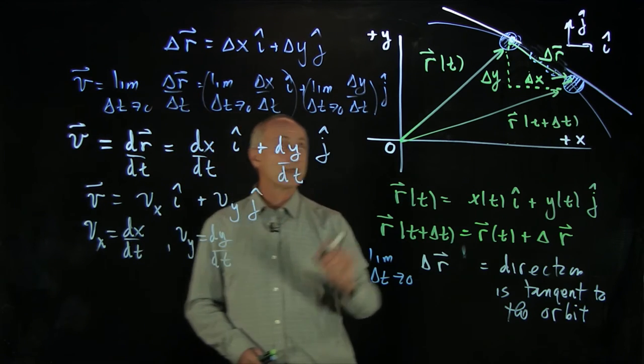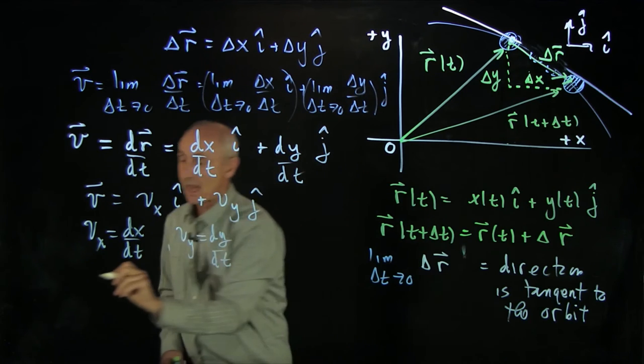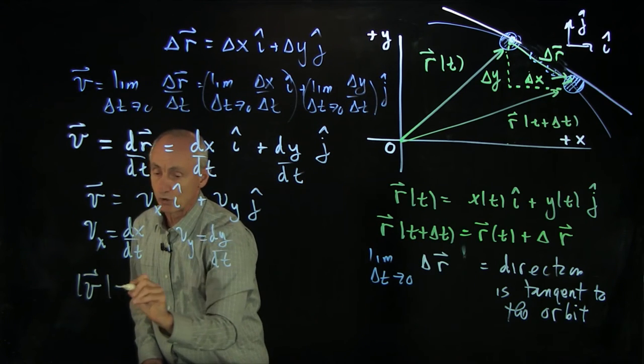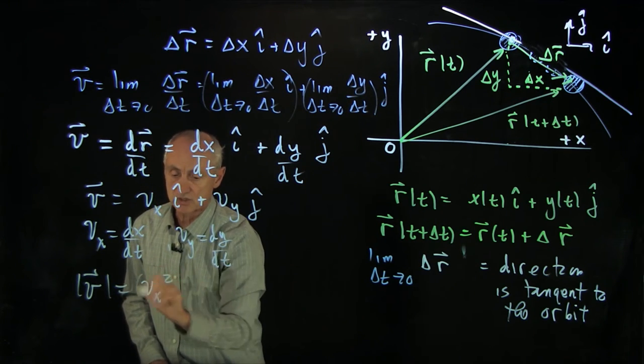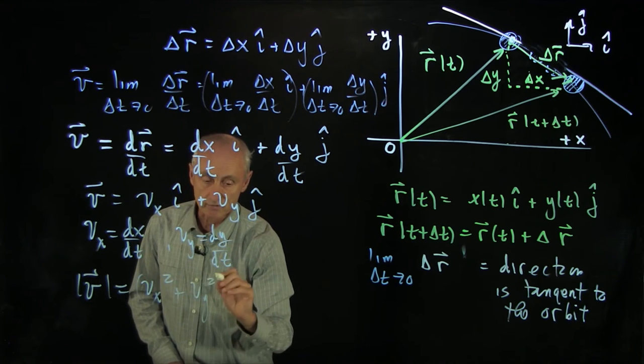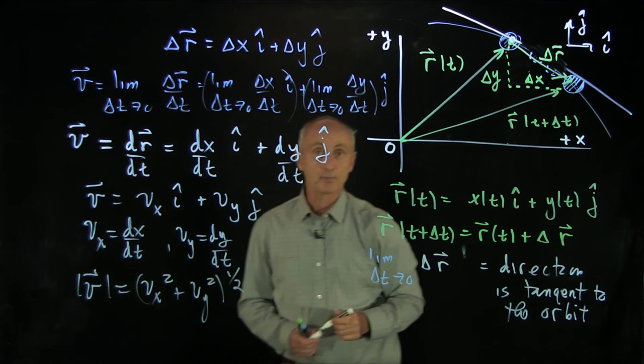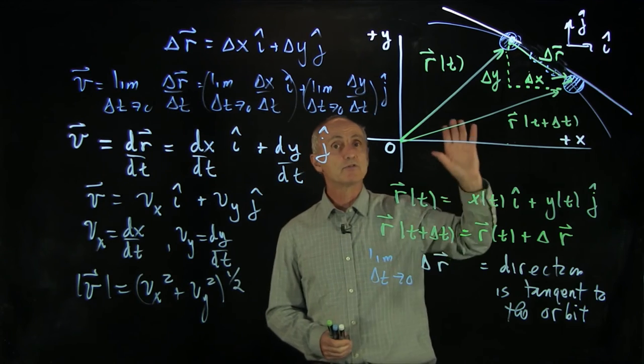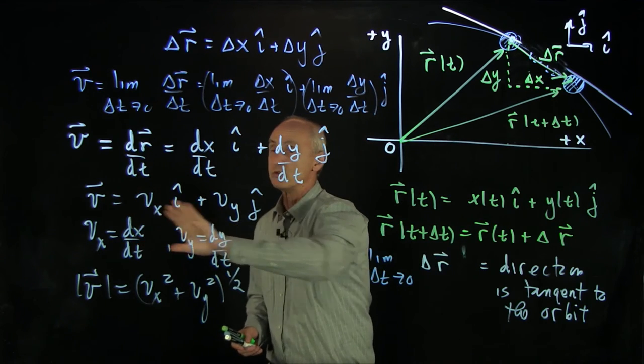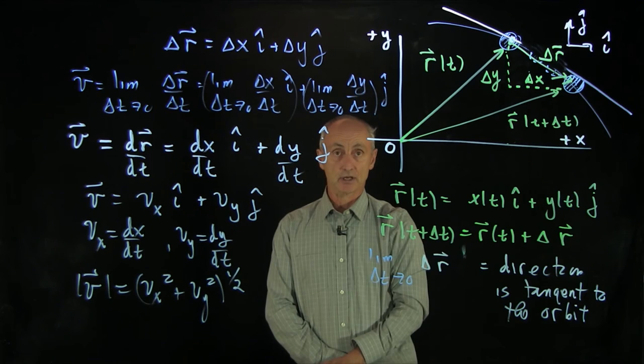Now recall that the direction was tangent to the curve, but the magnitude of the velocity, what we call the speed, is just the square root of the sum of the squares of the components. And so now we've described what we refer to as the instantaneous velocity.